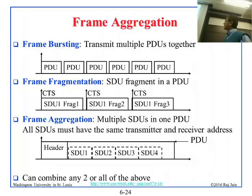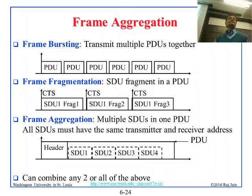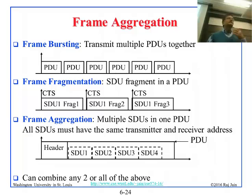All these SDUs will be put inside one MAC PDU. The last point says you can combine any two or all of the above. You could have one PDU which is part of a frame burst and contains multiple little SDUs, and then the next one is a fragment and the next one is a fragment making one SDU. So you could combine fragmentation, aggregation, and bursting together — three different things.